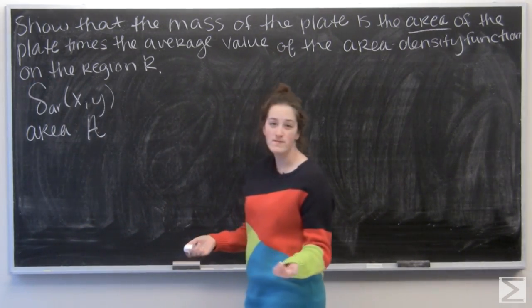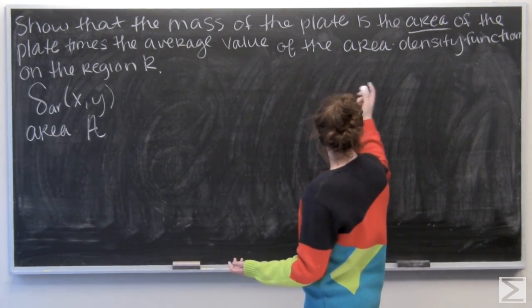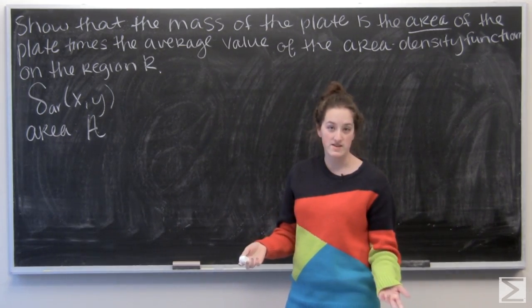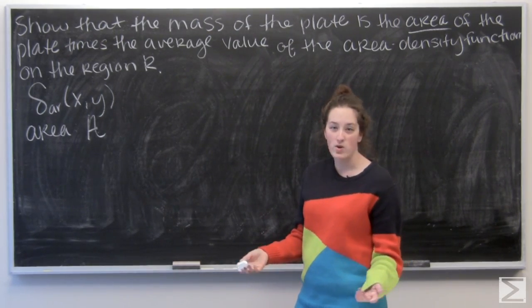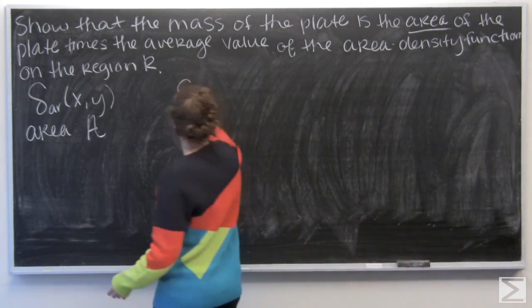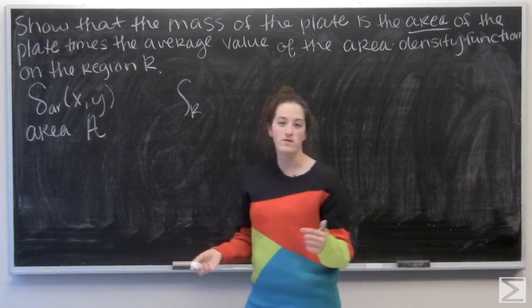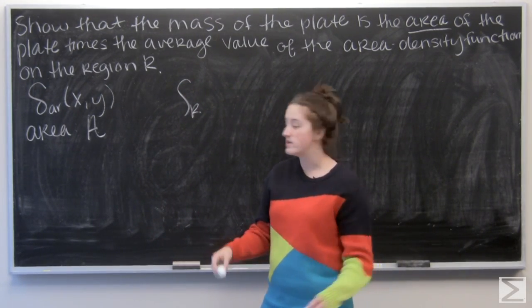And then the next thing I'm given is the average value of the area density function. Remember when we're calculating average value over a region, it is the integral of the function over the region divided by the area of the region.